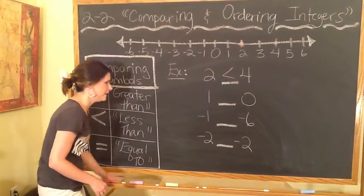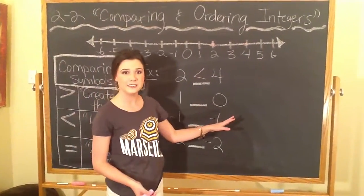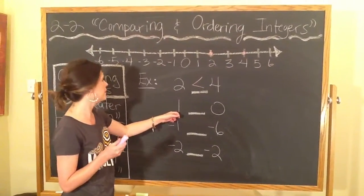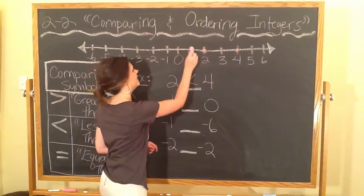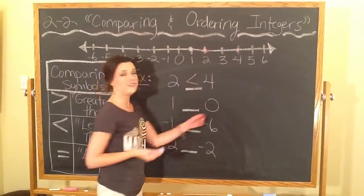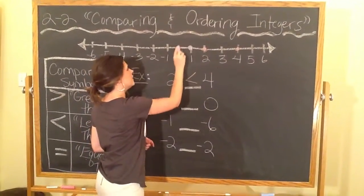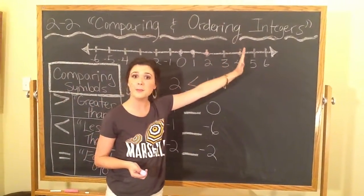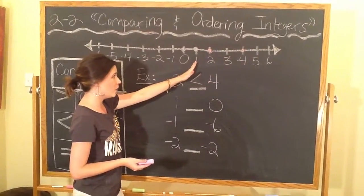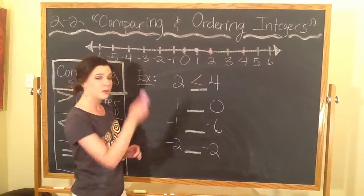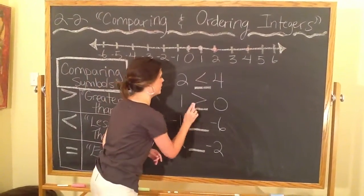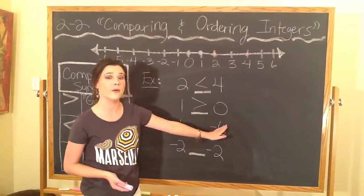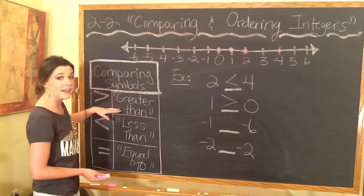Let's do another example with 1 and 0. Find coordinate point 1 on the number line, and find 0 right here. As I said, the further a number is to the right, the bigger it is. In this case, 1 is bigger than 0, so you open the symbol toward the bigger number, which is 1. This sentence reads: 1 is greater than 0.